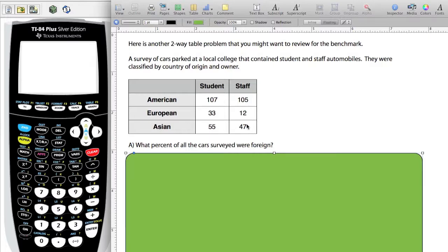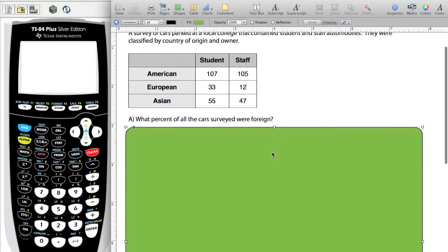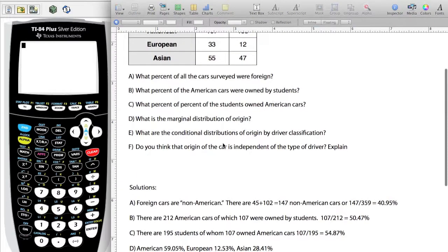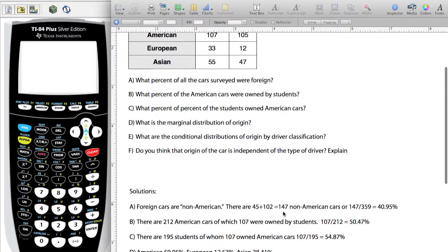So in order for me to do this, I need to sum the rows and the columns. In order to find out the percentage of the cars, you need to know the sum of the European cars, the sum of the Asian cars, divided by the total number of cars. You can add those cars together. Foreign cars are non-American. There's 45 plus 102, that gives us 147 cars.